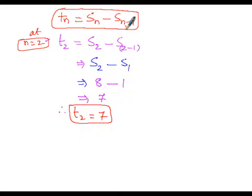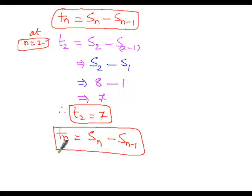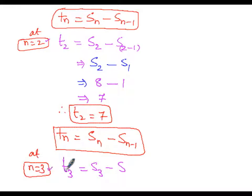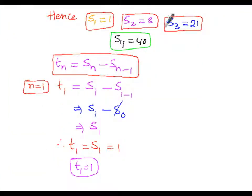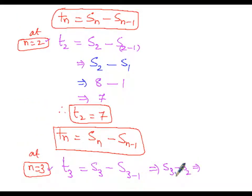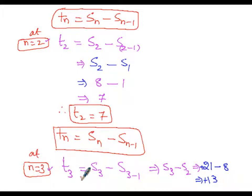For the third term at n=3: t(3) = S(3) - S(2) = 21 - 8 = 13. So the third term t(3) equals 13. Hence the first term is 1, second term is 7, and third term is 13.